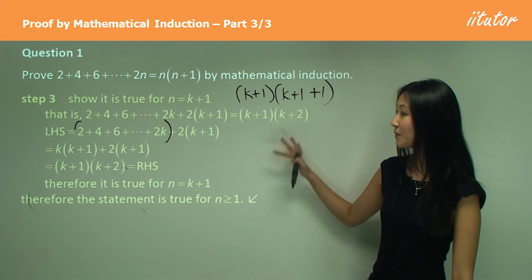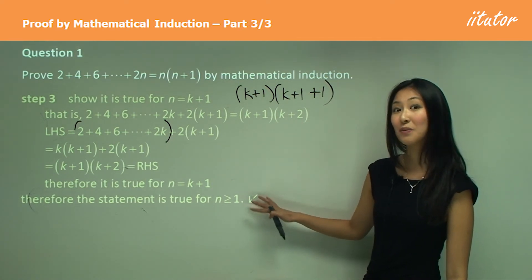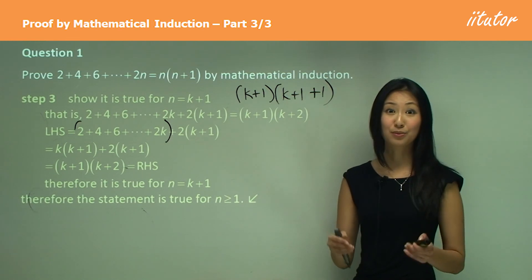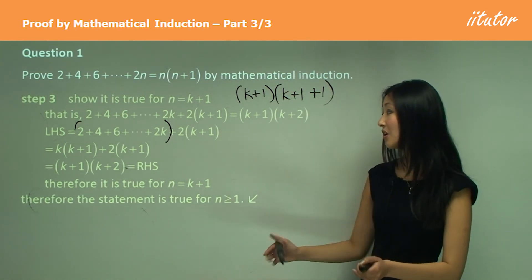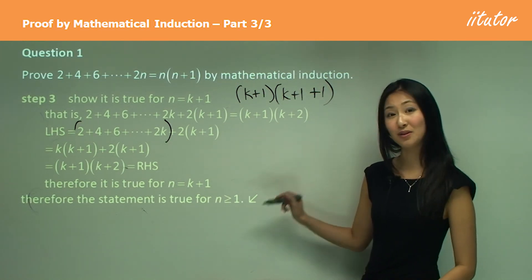So remember, once we've gone through the steps, we have to write the concluding sentence, which says that yes, we've actually proved that the left hand side equals to right hand side for all n is greater or equals to 1.